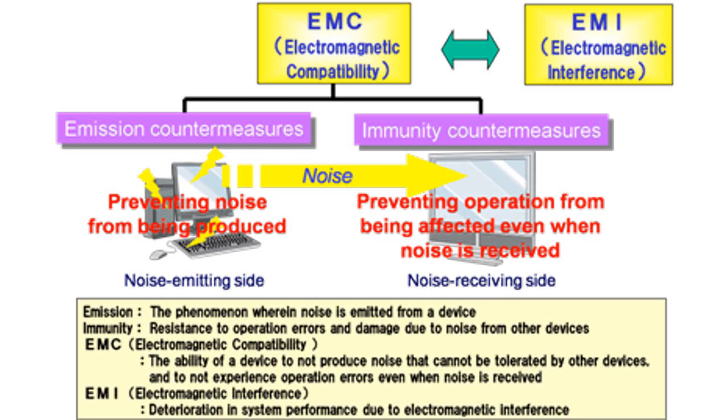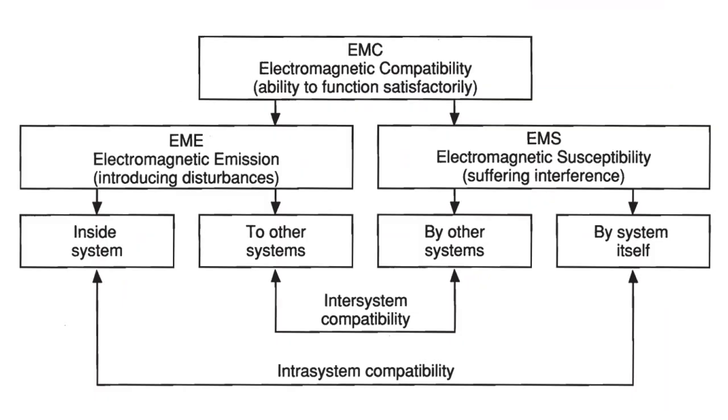The currents and voltages in one piece of equipment produce electromagnetic fields that reach into nearby equipment. It is obviously better to anticipate EMC problems by laying down timely requirements and taking necessary precautions. EMC really means living in electromagnetic harmony with neighboring systems. It has two main aspects.